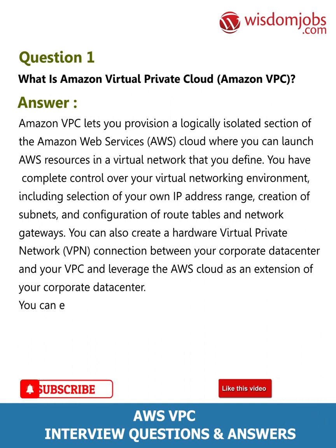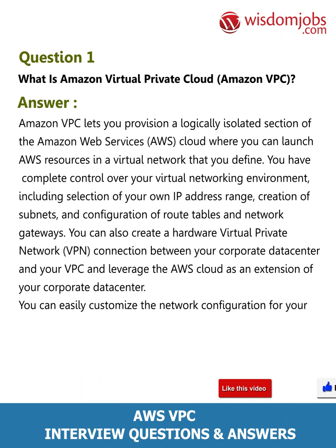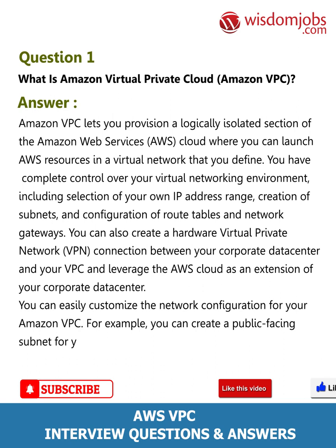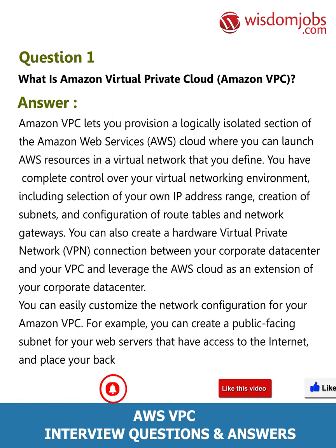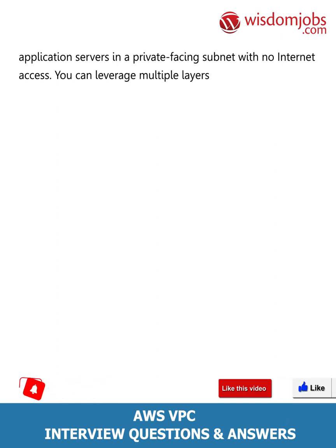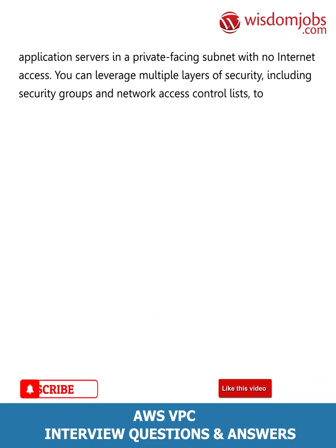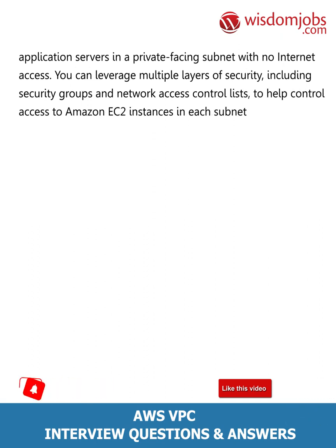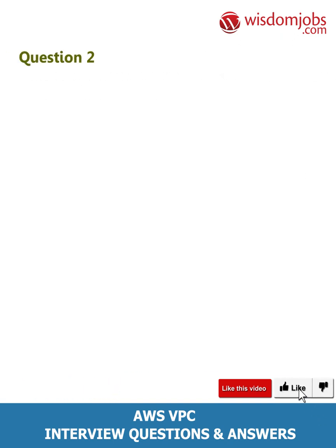You can leverage the AWS cloud as an extension of your corporate data center. You can easily customize the network configuration for your Amazon VPC. For example, you can create a public-facing subnet for your web servers that have access to the internet, and place your back-end systems such as databases or application servers in a private-facing subnet with no internet access. You can leverage multiple layers of security including security groups and network access control lists to help control access to Amazon EC2 instances in each subnet.